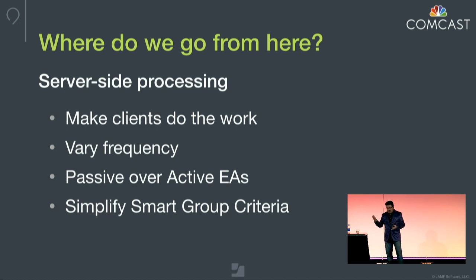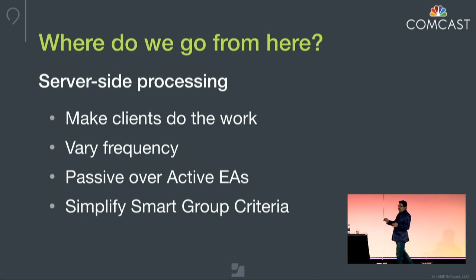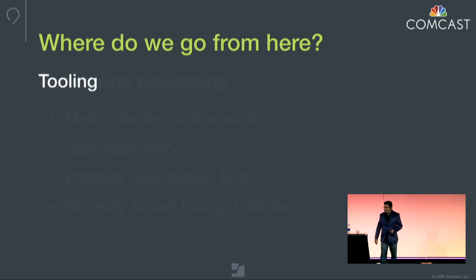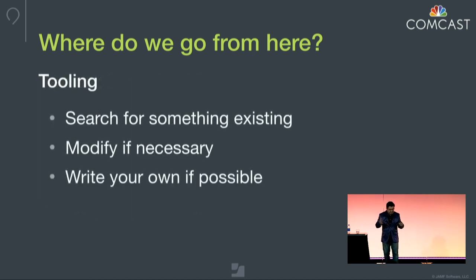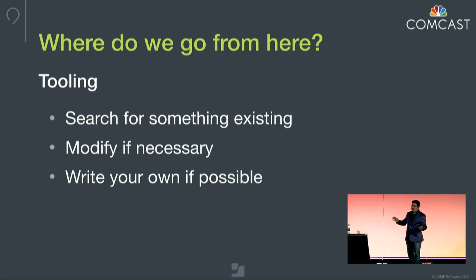Things like varying the frequency of when machines check in, passive over active extension attributes — EAs are scripts still running, and once you get to a certain size that's a lot of work happening. Simplify your smart group criteria so it's not a lot to calculate — binary, true or false, yes or no. If you're lazy like me, go look for somebody who's already done the thing you want to do and adapt it. You modify if necessary, and as a last resort, write your own.